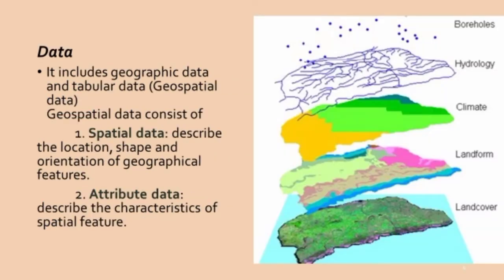Data is another main component of GIS. It includes geographic data and tabular data — that is, geospatial data — consisting of spatial data and attribute data. This data can be gathered with the help of remote sensing.